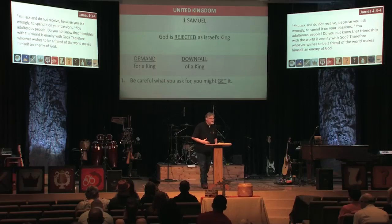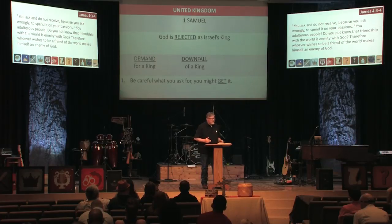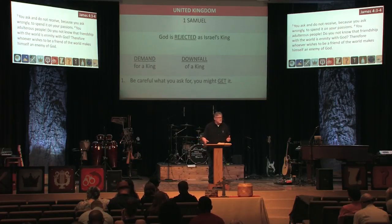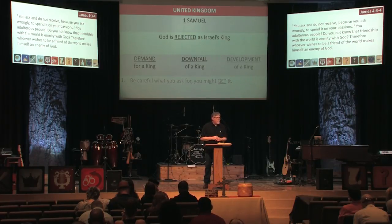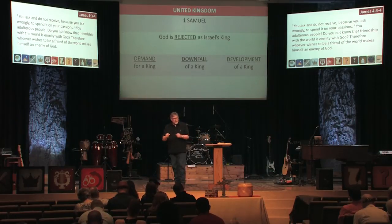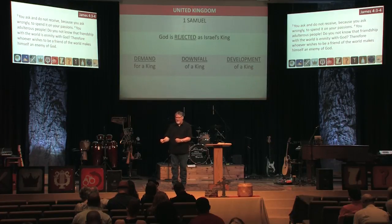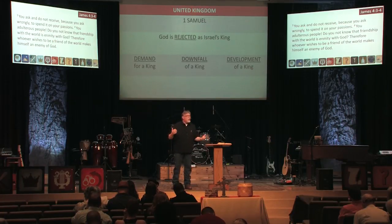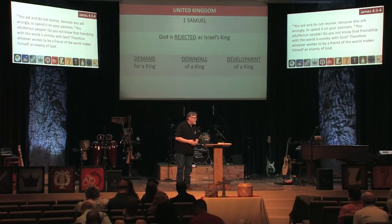The third part of the book speaks of David and we call it the development of a king. When God tells Saul that he's rejecting him and tearing the kingdom away, he's giving it to another. We find out that's David — the son of Jesse, the son of Obed, who was the son of Ruth and Boaz.